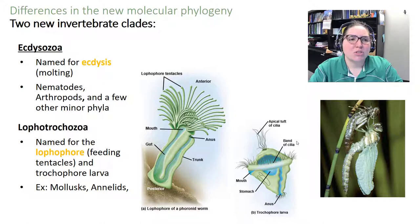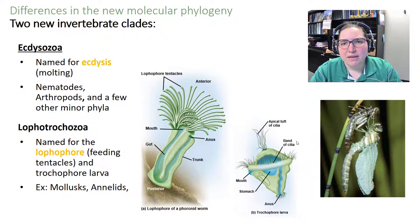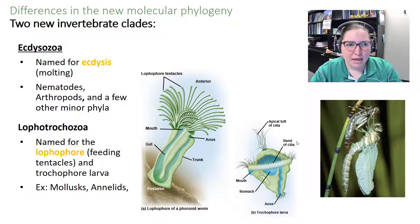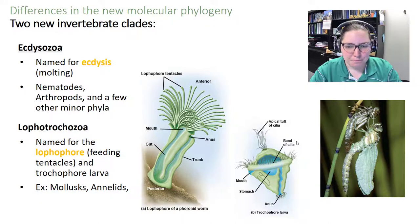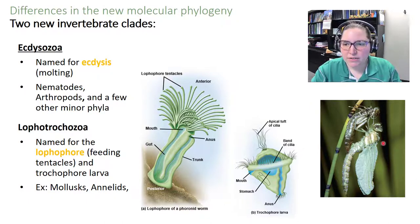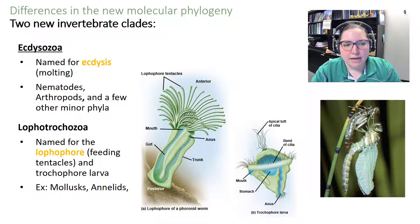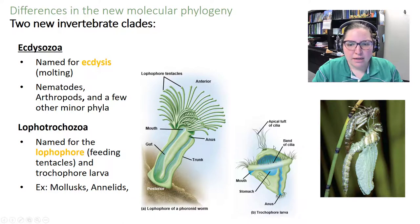Two new invertebrate clades came about by molecular phylogeny: the Ecdysozoa and the Lophotrochozoa. Ecdysozoans are named for ecdysis — the fancy word for molting — and include nematodes, arthropods, and a few other phyla. Lophotrochozoans are named for the lophophore feeding tentacles and a trochophore larval form; they include mollusks and annelids.